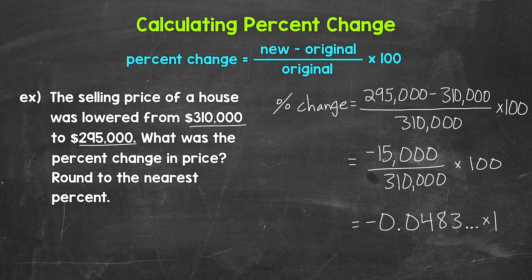And we need to multiply that decimal by 100 in order to convert it to a percent. So let's multiply by 100 now by moving the decimal once, twice, to the right. And we get negative 4.83, and that decimal continues on.